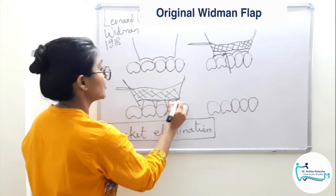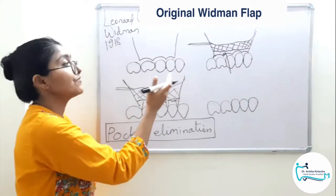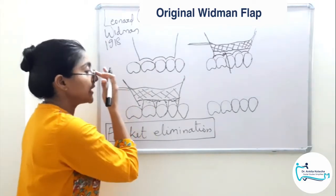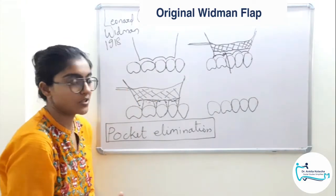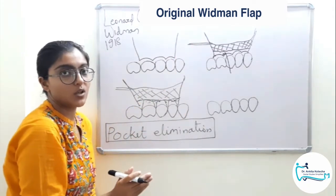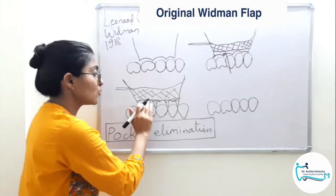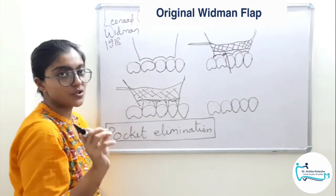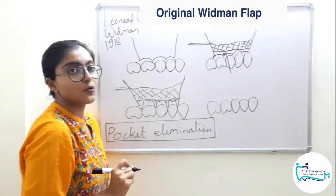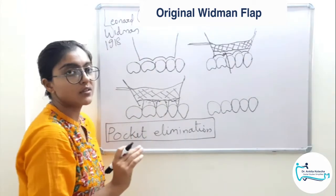After flap reflection, this tissue collar around the teeth is eliminated — removed with the help of curets. Now after flap reflection and tissue collar removal, we have a clear picture of the underlying bone and root surfaces. We have direct access to the underlying root and bone — at least 2 to 3 mm of the marginal alveolar bone is exposed. The first step is scaling and root planing, that is thorough debridement of the root surfaces to remove all the deposits.